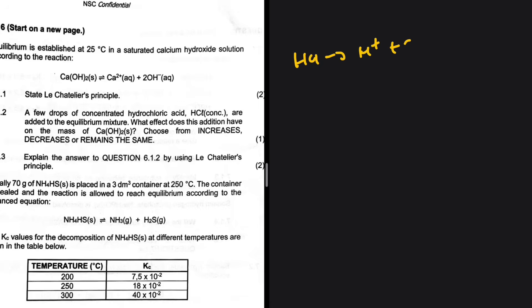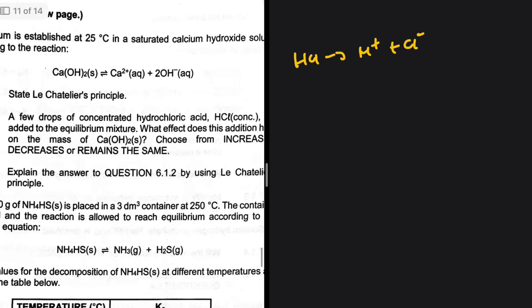HCl gives us H+ plus Cl-. What is going to happen here is that the H+ and the OH- will react, and then as they react it means that the amount of OH- goes down.